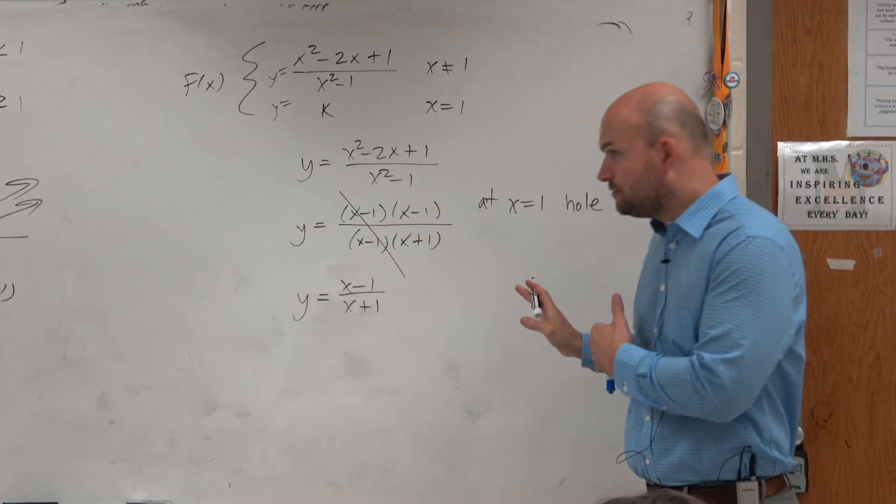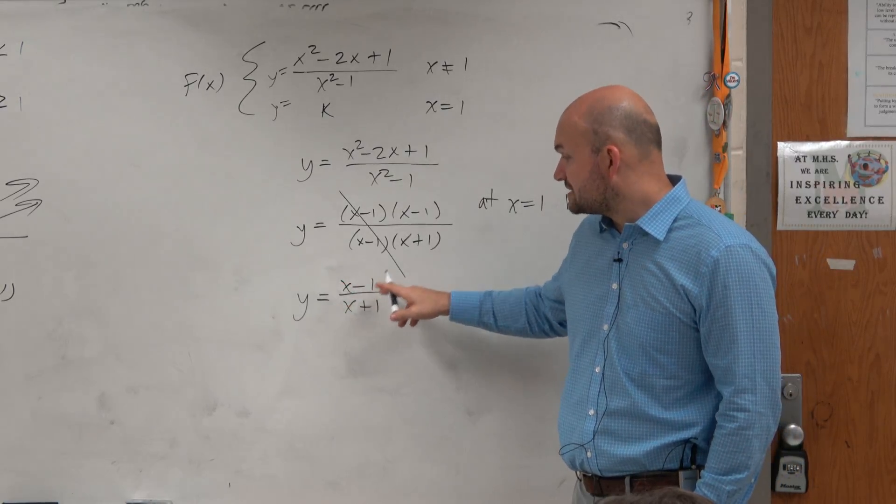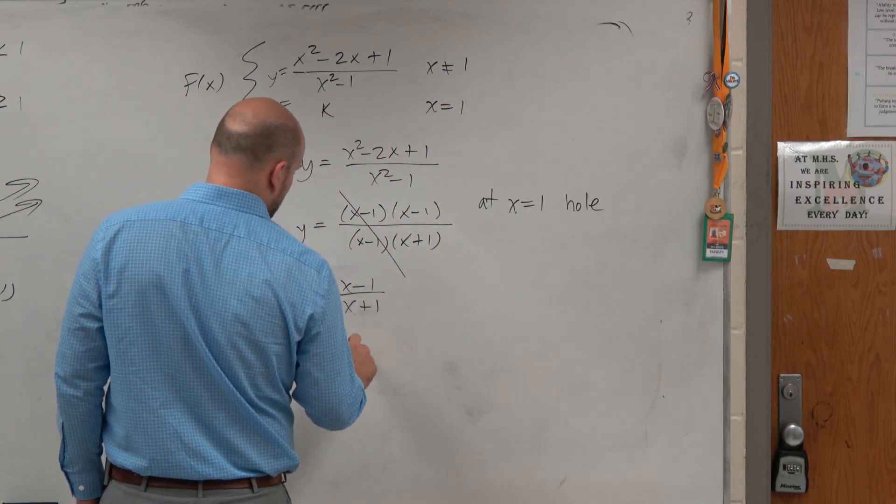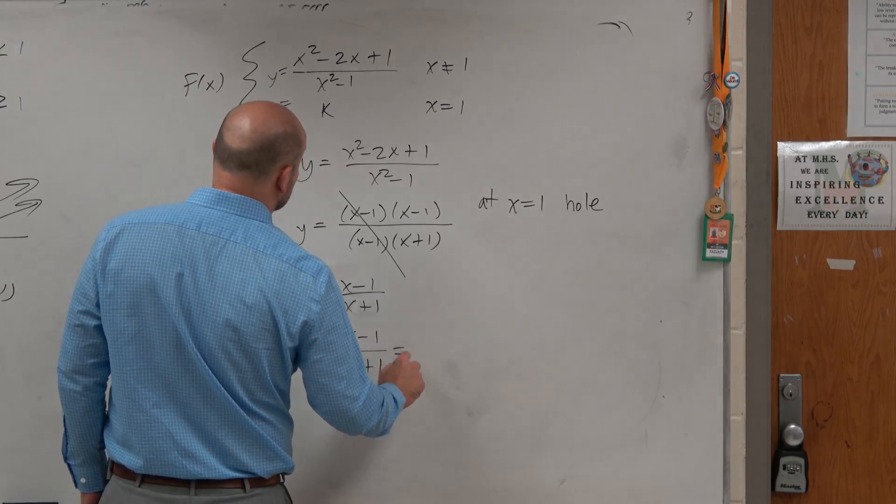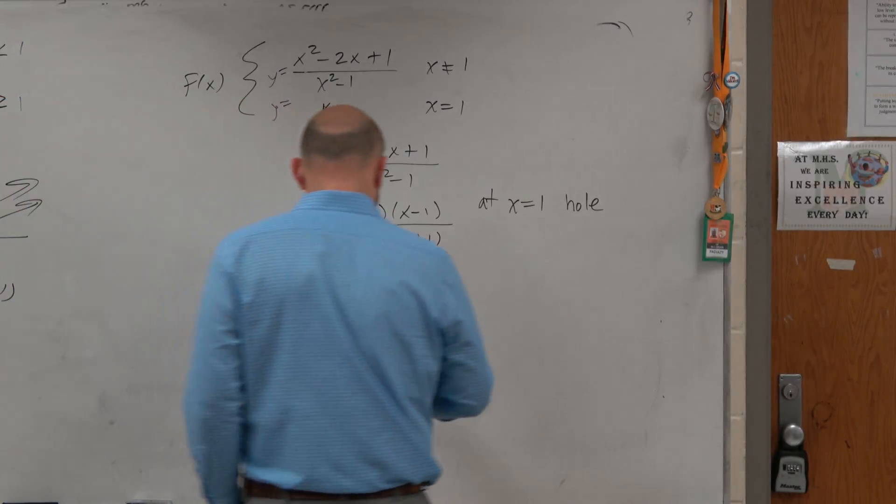So we just set them equal to one another. So we can say x minus 1 over x plus 1, and then set that equal to—so let's set it in there. Set the y values equal to one another. And again, I'm using k. Is it OK if I use k instead of c? Yes, it is perfectly fine that way.